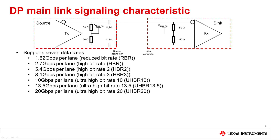2.7 gigabits per second, or HBR; 5.4 gigabits per second, or HBR2; 8.1 gigabits per second, or HBR3; 10 gigabits per second, or UHBR 10; 13.5 gigabits per second, or UHBR 13.5; and 20 gigabits per second, or UHBR 20.